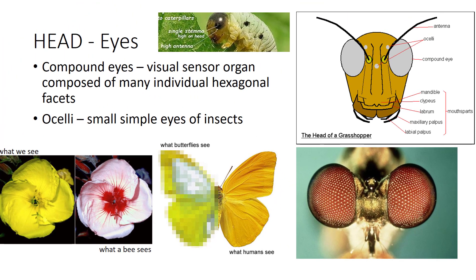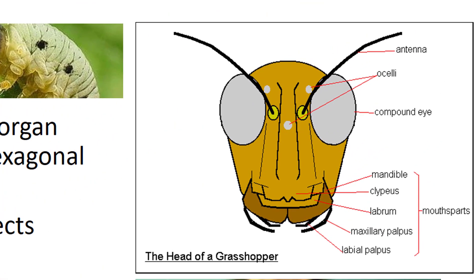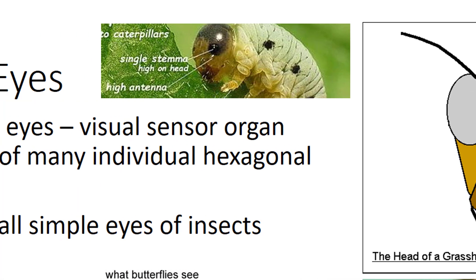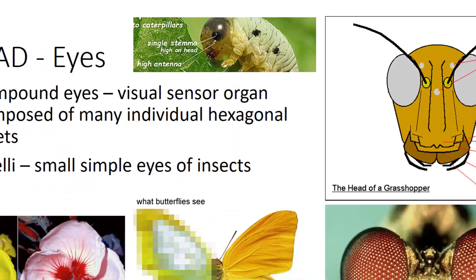Ocelli are simple eyes. Insects often have two to three ocelli. In flying insects such as Hymenoptera, Diptera, Odonata, and Neuroptera, they are light-sensitive organs on the topmost surface of the head. Also referred to as stemma, they are found in many holometabolous larvae that bear no other form of eyes until they enter their final stage of growth.